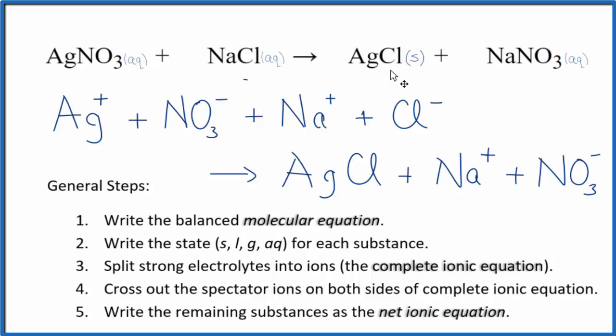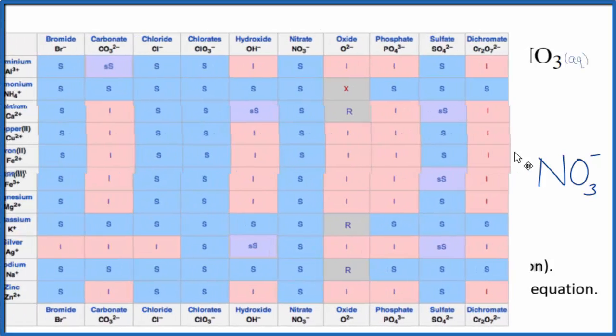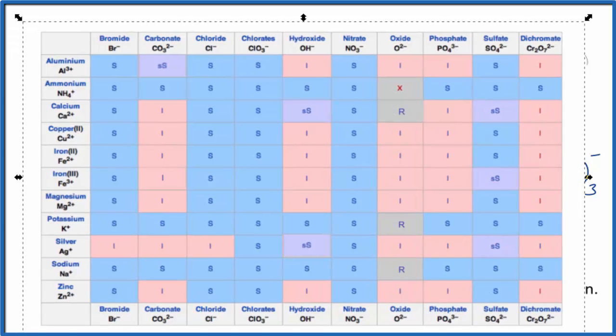There are two ways you could know this was a solid. If you've memorized the solubility rules, and you know that silver chloride is kind of one of those exceptions to chlorides. This is insoluble. Most chlorides are soluble, or you could look it up on this solubility table if you're allowed to have one of these.